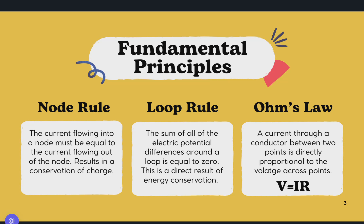The third, and probably most important, is Ohm's Law, which says that the current through a conductor between two points is directly proportional to the voltage across those points. The current here is I, R is the resistance, and V is the voltage.